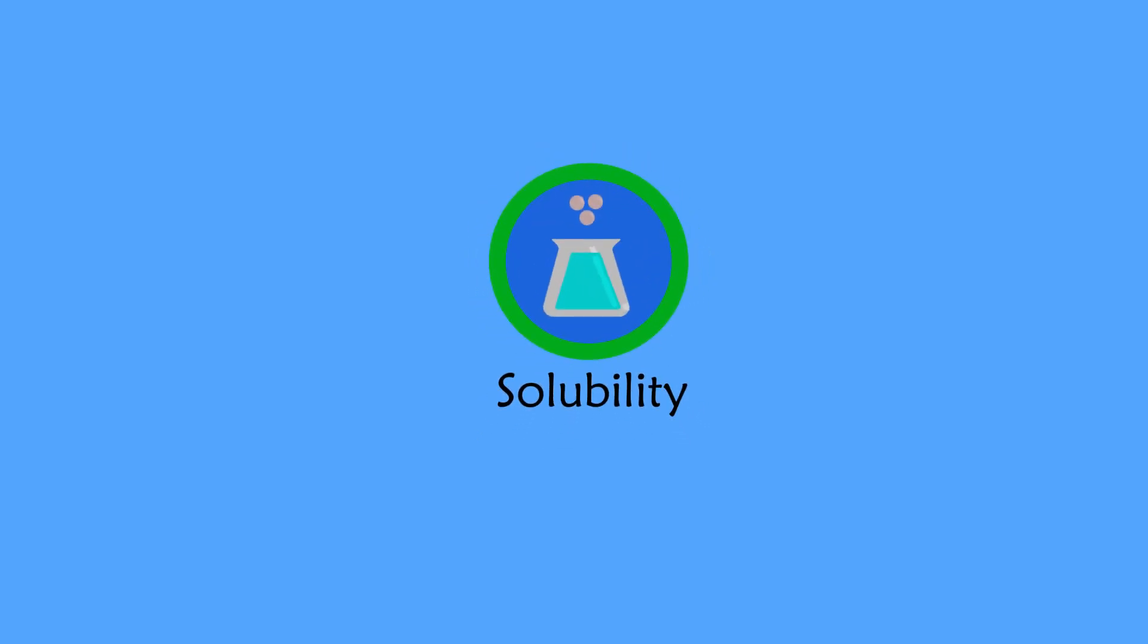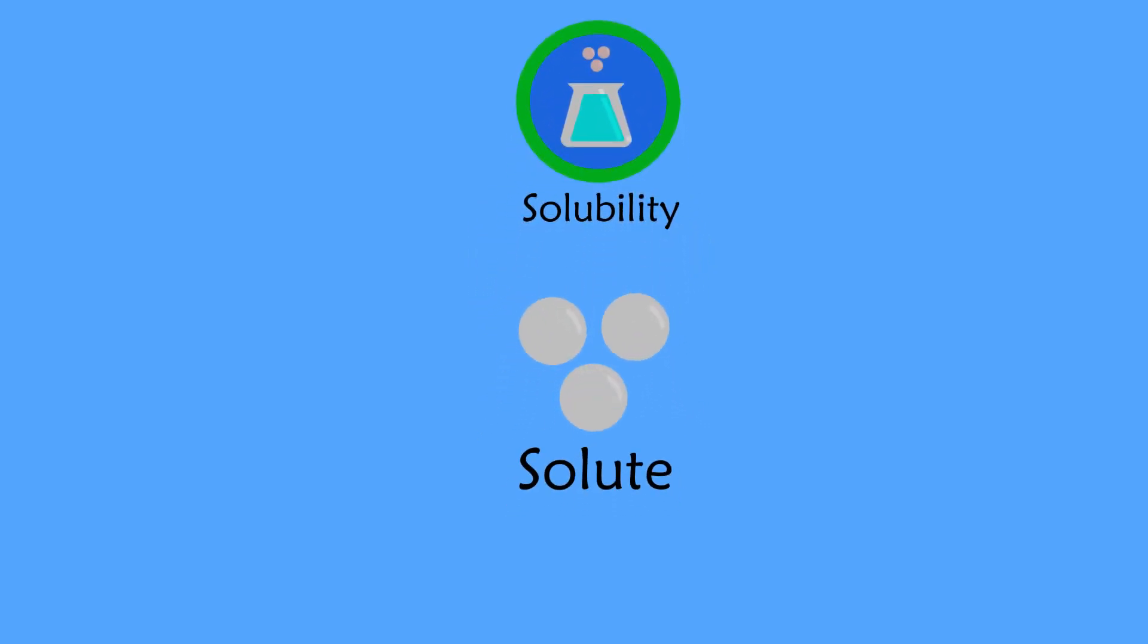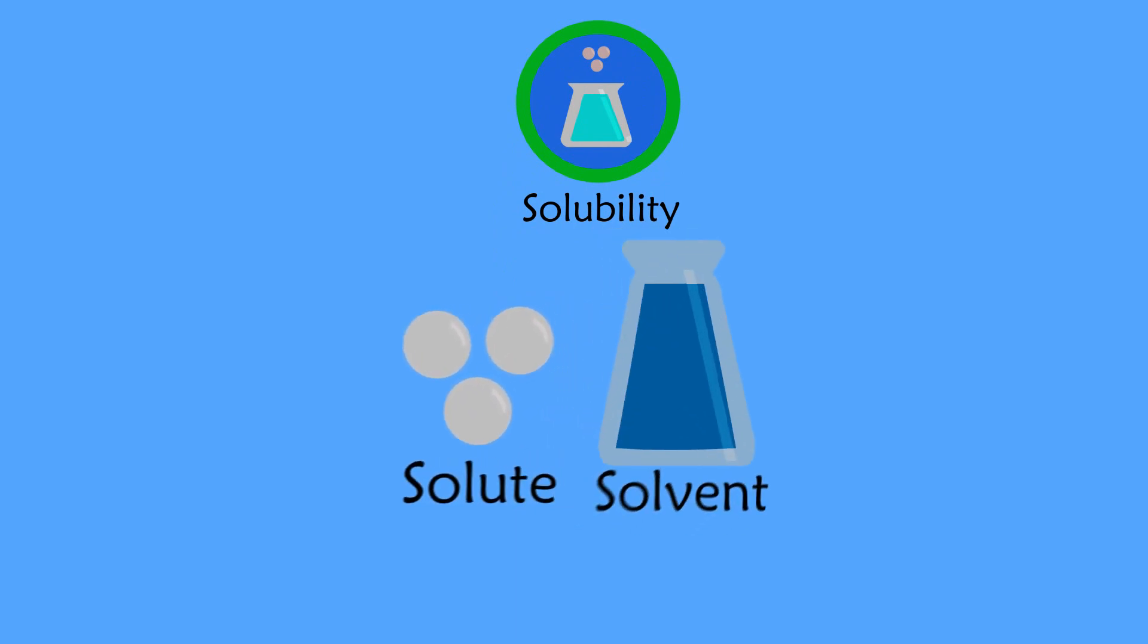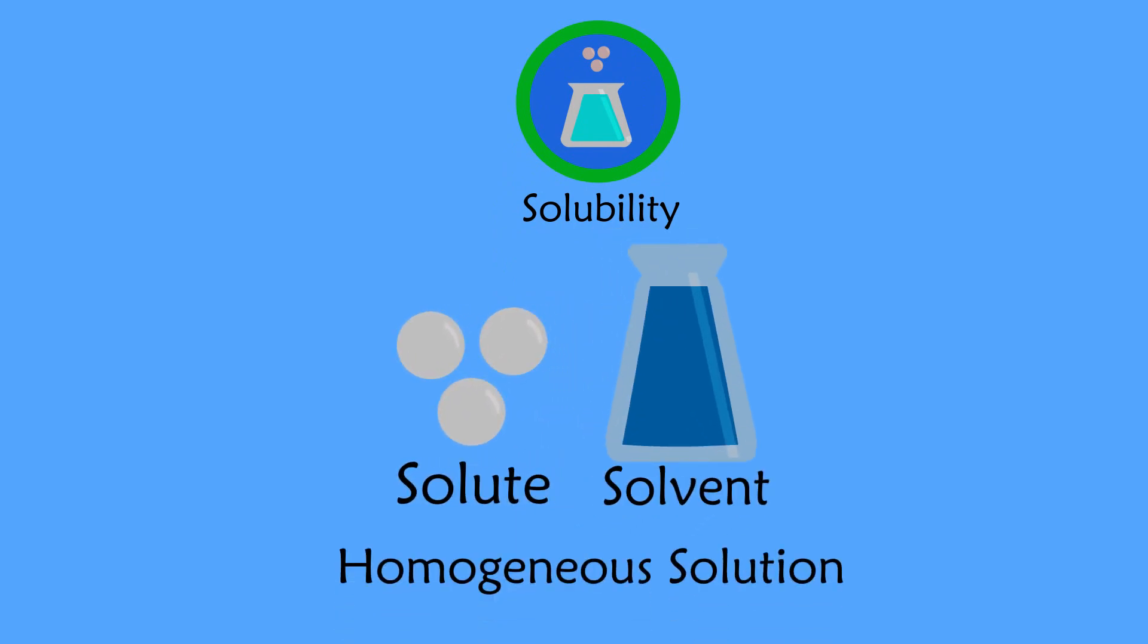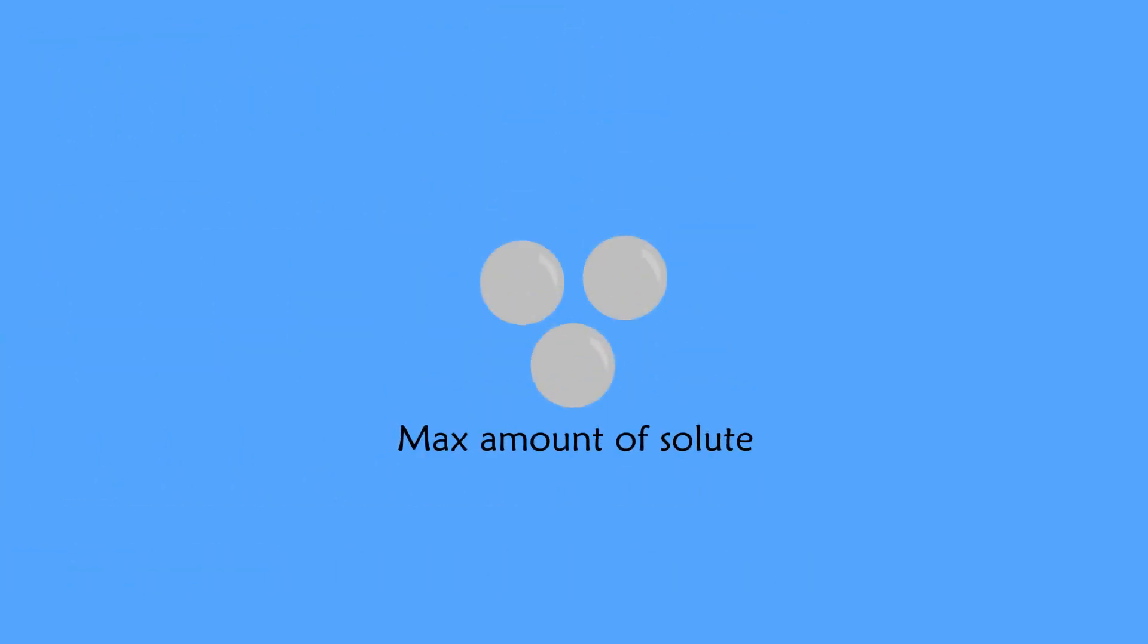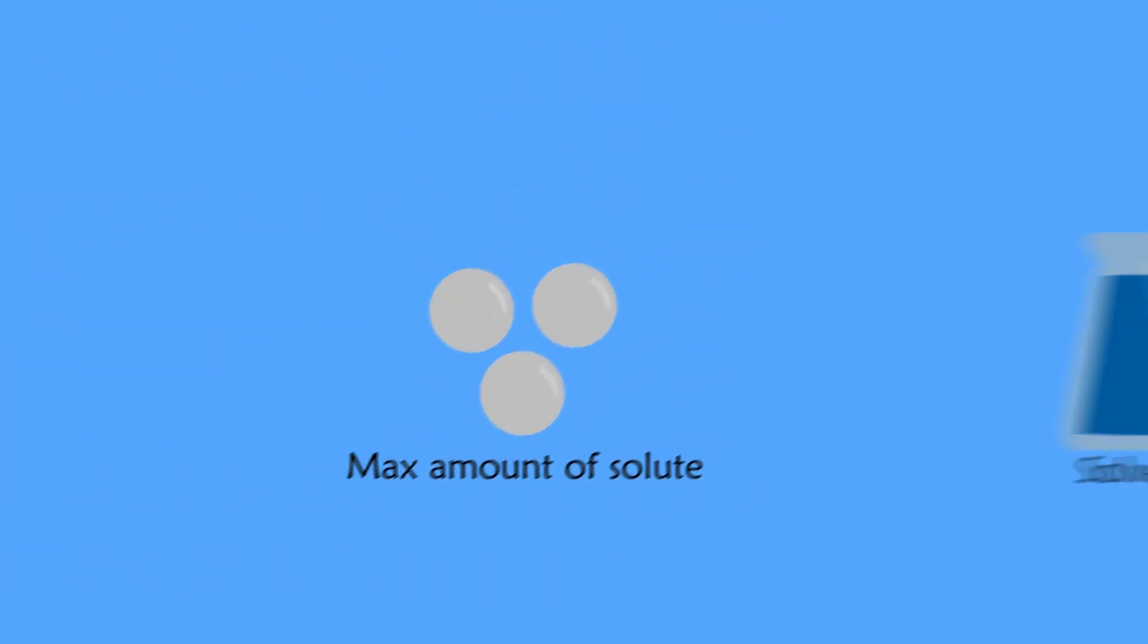Solubility is a chemical property referring to the ability for a given substance, the solute, to mix or dissolve in a solvent to form a homogeneous solution. It is measured in terms of the maximum amount of solute dissolved in a solvent at equilibrium.